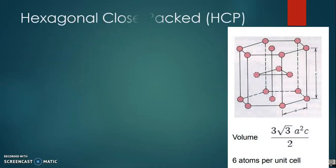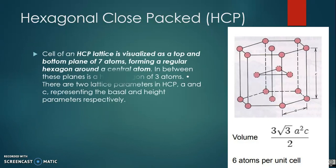HCP structure. The HCP structure has three layers of atoms. In each of the top and bottom layers, there are six atoms that arrange themselves in the shape of a hexagon and a sixth atom that sits in the middle of the hexagon.